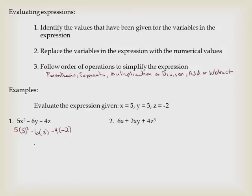Now I'm going to follow order of operations. These parentheses indicate multiplication, not an actual parentheses, so they don't come first. The first thing will be exponents. Then I multiply: 5 times 25 is 125, 6 times 3 gives me negative 18, and negative 4 times negative 2 is positive 8. So I have 125 minus 18 plus 8. 125 minus 18 is 107, plus 8 gives me 115.